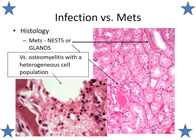A common thing we have to evaluate is infection versus metastatic disease. Here is a side-by-side comparison: on the right, nests or glands of cells forming columns — this is a clear cell kidney carcinoma. On the left is osteomyelitis with a very heterogeneous cell population in the middle of marrow. In this image, the left side of the screen is lamellar bone; the space to the right is a large marrow space filled with inflammatory cells, histiocytes, and other infection cells.